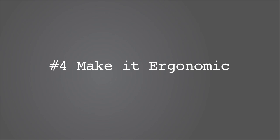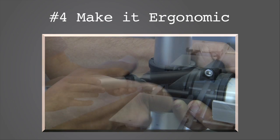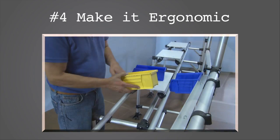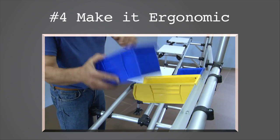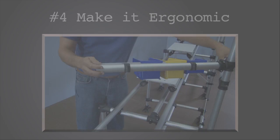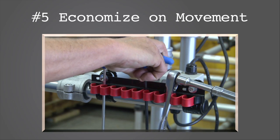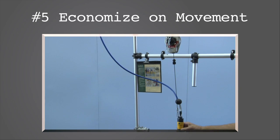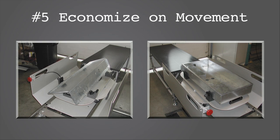Make it ergonomic. Don't fight the process. Design the workstation to fit the task and operator, not the other way around. Use a modular design that makes it easy for the operator to work their position. Economize on movement — are the tools, supplies, components, and equipment within easy reach? The goal is to integrate fixturing, product rotation, and positioning into the process.